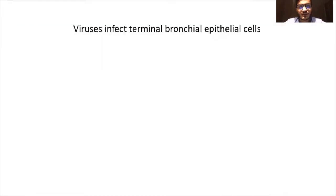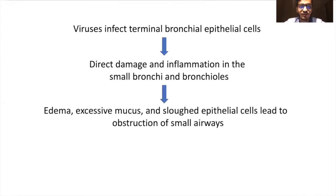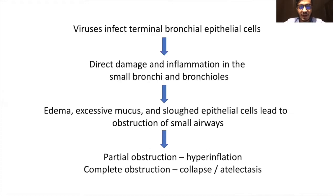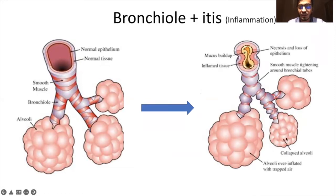These viruses infect the terminal bronchial epithelial cells, which directly or indirectly cause damage and inflammation of these small bronchi or bronchioles. There is edema, excessive mucus, and sloughed epithelial cells, which lead to obstruction of these small airways. Depending on whether it is partial obstruction, it may lead to hyperinflation, or complete obstruction can lead to collapse or atelectasis. On the left side is a normal airway; partial obstruction leads to hyperinflation via a ball-valve mechanism, and complete obstruction leads to a collapsed airway.